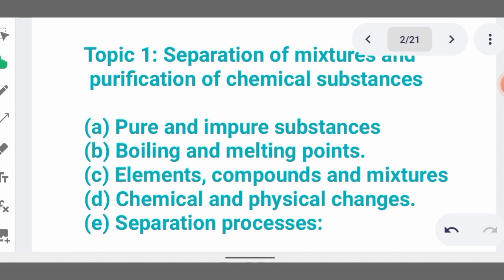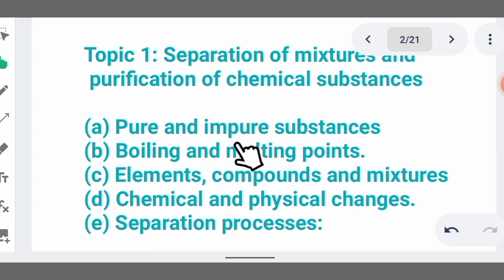You have to study and understand those separation techniques very well. Then we talk about pure and impure substances — for example, elements are pure substances and mixtures are impure substances. Then we talk of boiling and melting points. Inorganic compounds have the highest boiling and melting points due to the strong electrovalent bonds that occur between them, while organic compounds have low boiling and melting points due to the covalent bond that exists between them.